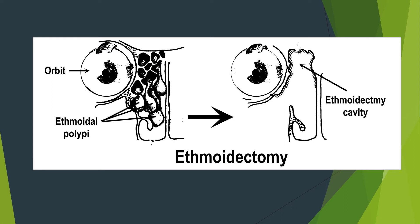In ethmoidectomy, we transform the ethmoidal sinuses, which are multiple cavities, into one cavity.